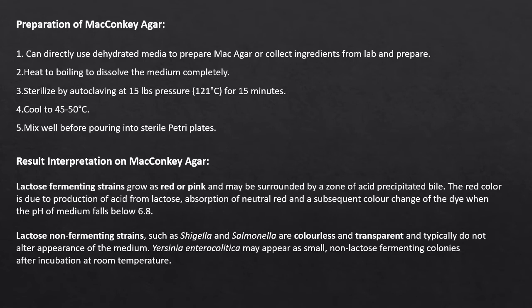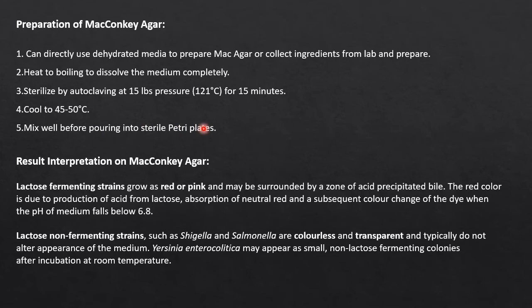For preparation, you can directly use dehydrated media, weighing according to the instructions on the bottle, or collect individual ingredients from your lab. Add everything to distilled water and heat until fully dissolved. Then plug and wrap your flask and sterilize by autoclaving. Let it cool to 45–50°C before pouring into sterile Petri plates. Perform 18 hours of sterility testing to confirm autoclaving was done properly before inoculating cultures.